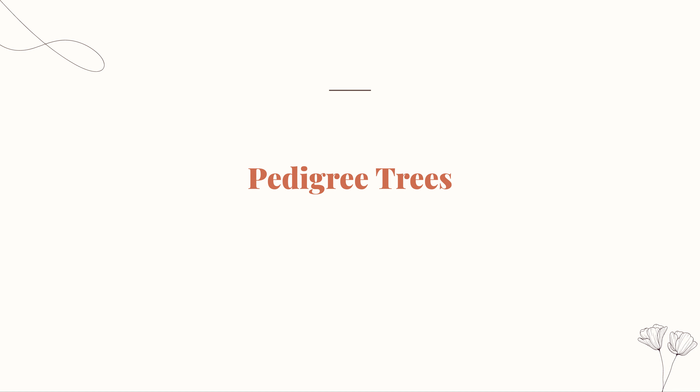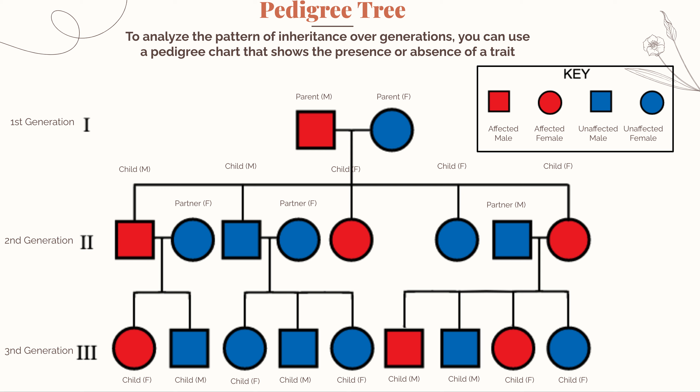A pedigree tree is essentially just a table of however many generations you're wanting to study — it can be two, three, five, ten — and in these generations you will identify one trait that you're following from generation to generation. You can see in this key the shape and color of the different icons indicate different parts of information.